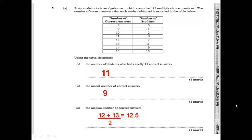Part 3 asks for the median number of correct answers. The median is the middle value. With 60 students, the middle falls between the 30th and 31st values. The 30th value falls at 12 and the 31st value falls at 13. So we add 12 and 13 together and divide by 2, giving us a median of 12.5. That's 1 mark.